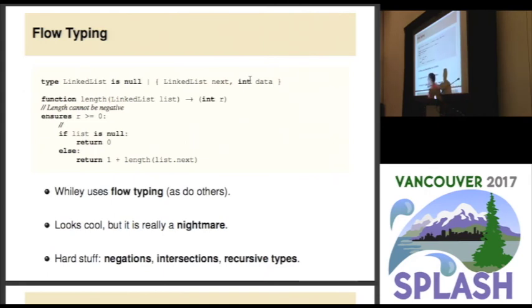Probably if I was going to start over again knowing what I know now, I might decide against using flow typing, because Whiley is not really about flow typing. It's actually about checking pre- and post-conditions, and you can see I've got a little post-condition up there to illustrate that. So flow typing is a bit of a distraction, but it is kind of neat, and it's sort of a part of Whiley now. And the hard stuff is basically having negation types, intersection types, and recursive types.